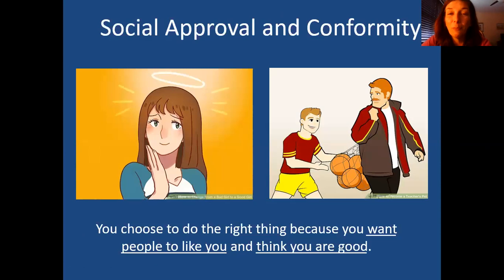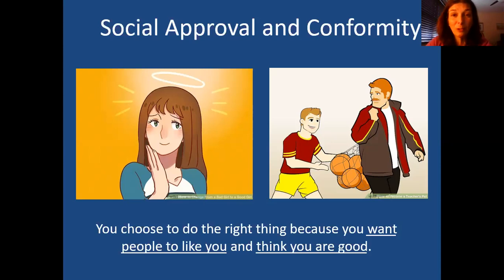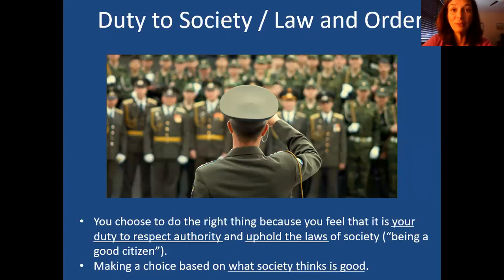Now moving from me a little more toward the we — social approval and conformity. This is about wanting to look good in others' eyes. Maybe I want my parents to think I'm a good girl, or my coach to like me, or my friends to approve. We're taking other people into account, but it's still a bit self-focused — we may not do it because it's the right thing, but to get approval or be liked. Branching out further: doing the right thing because you want to be a good citizen. You have a sense of duty to society and want to uphold its laws and norms — following the rules and mores of society because you think it's what society considers good.